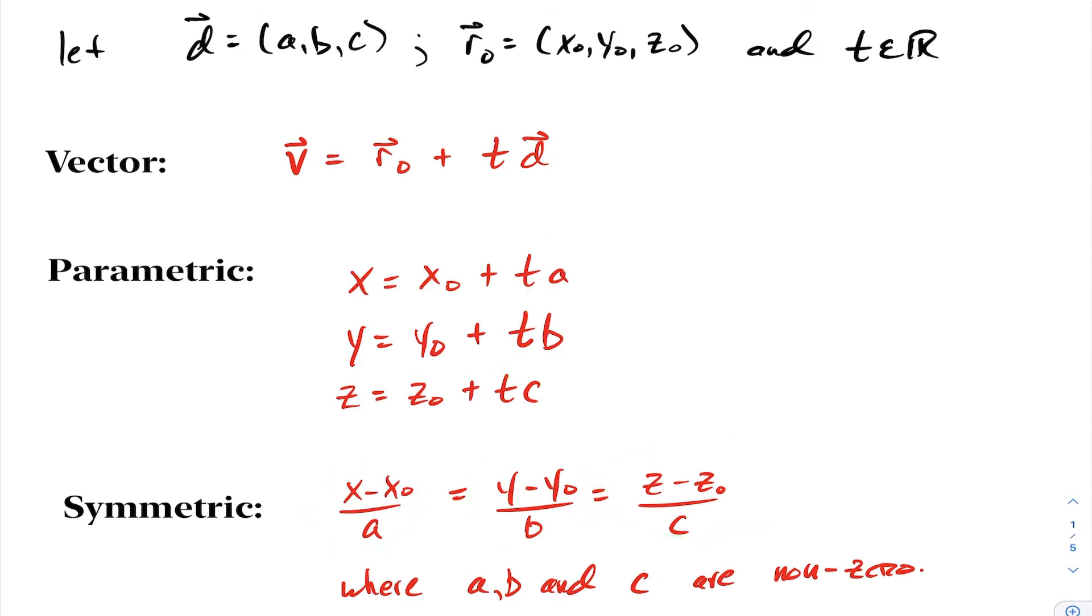Since the t is obviously the same for all three of these x, y, and z's, therefore you can equate these and that would be your symmetric form. The only added condition you have is that the a, b, and c values must be non-zero because we cannot divide by zero.